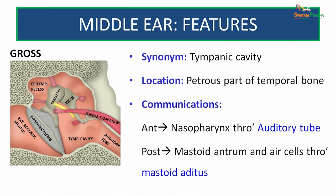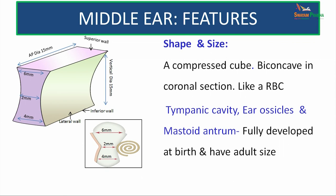The middle ear is also referred to as tympanic cavity or tympanum. It is located within the petrous part of the temporal bone. It communicates anteriorly to the nasopharynx through the auditory tube, and posteriorly to the mastoid antrum and air cells through the mastoid aditus. Looking at the middle ear, it can be compared to a compressed cube, biconcave in coronal section, looking more or less like an RBC.